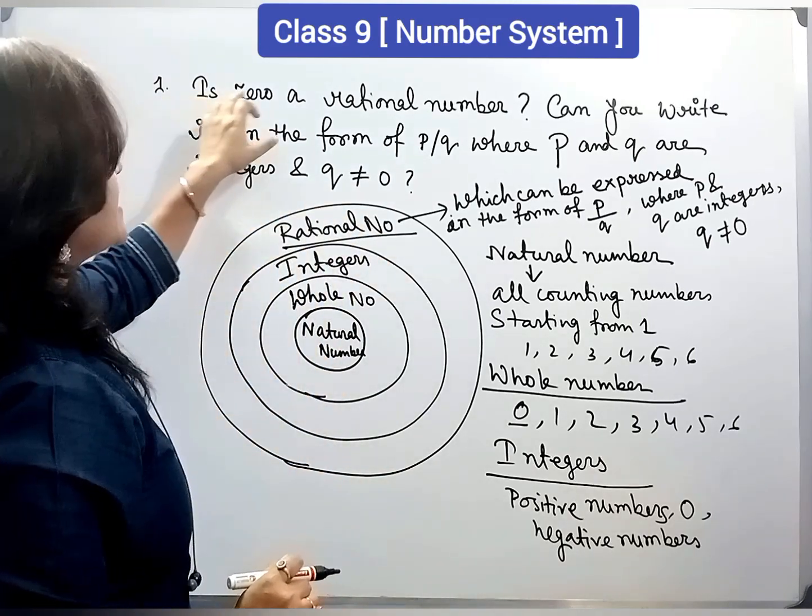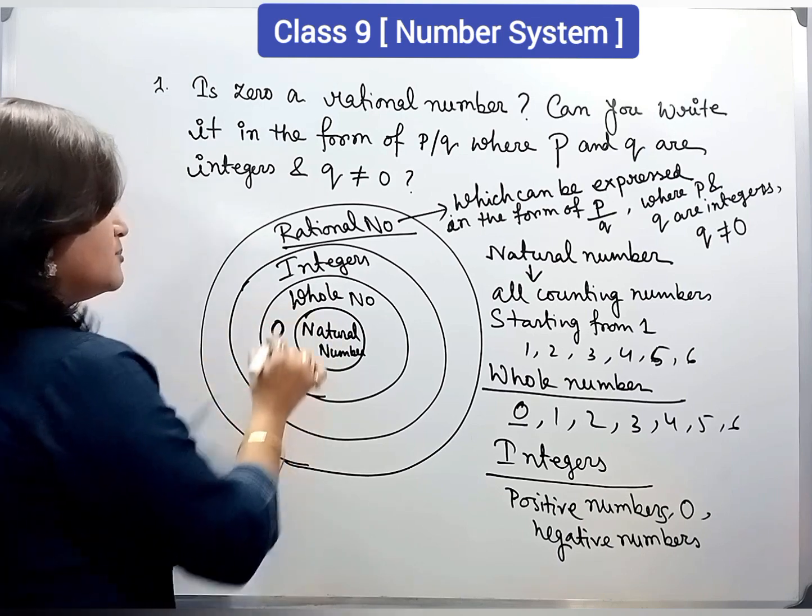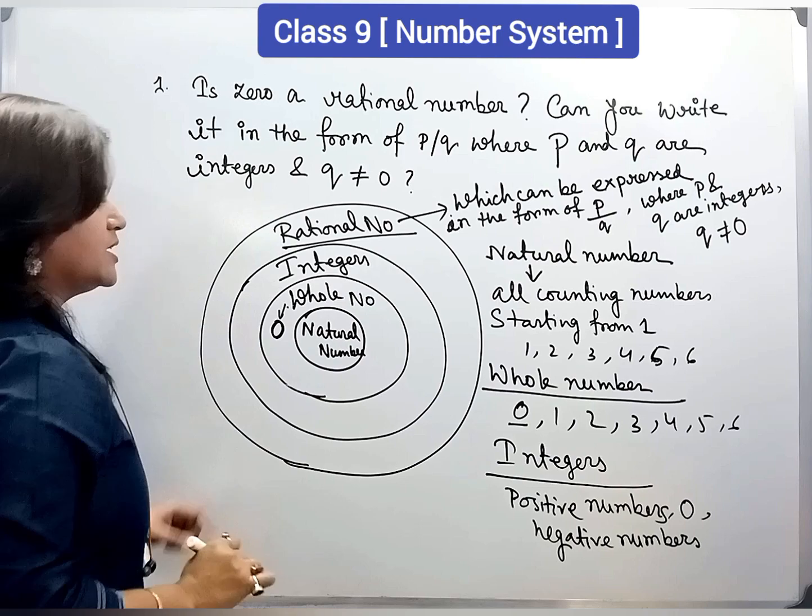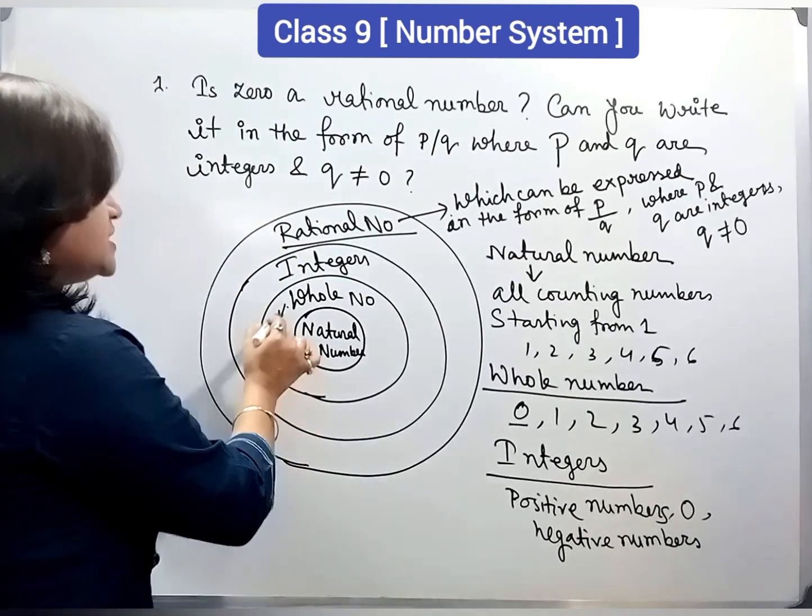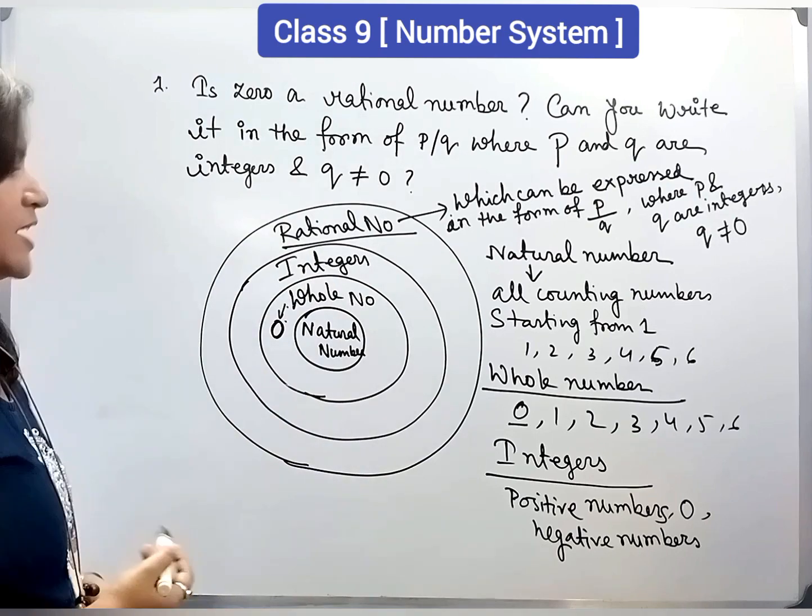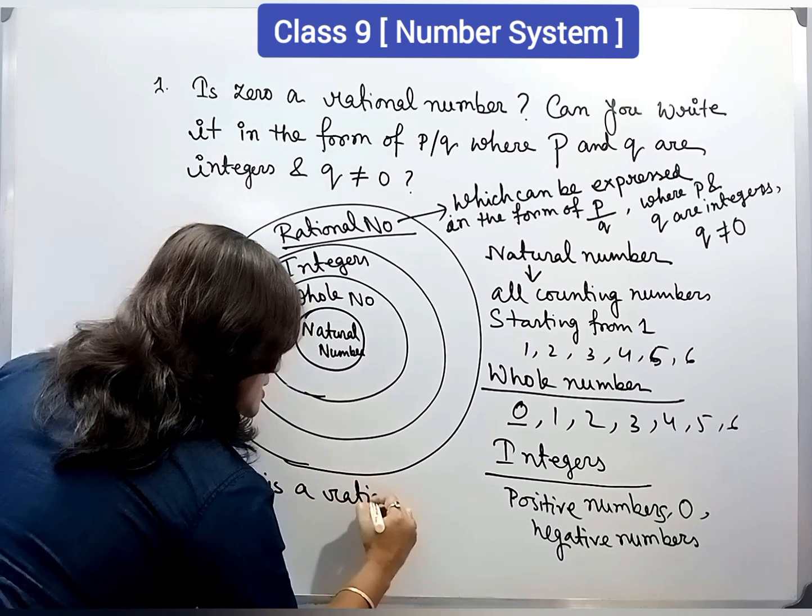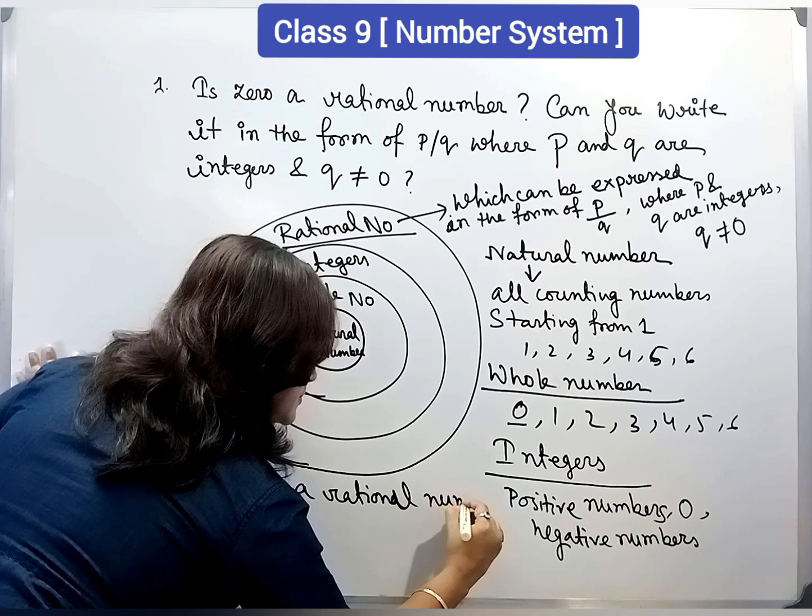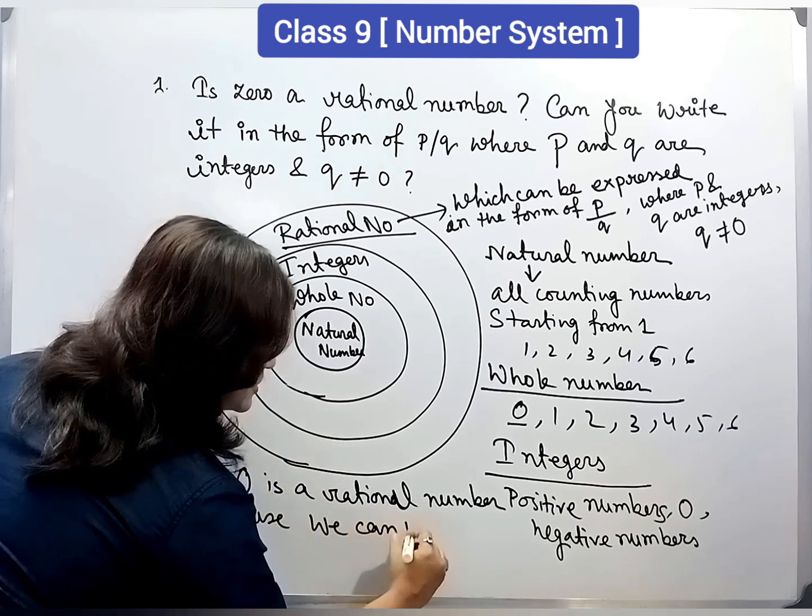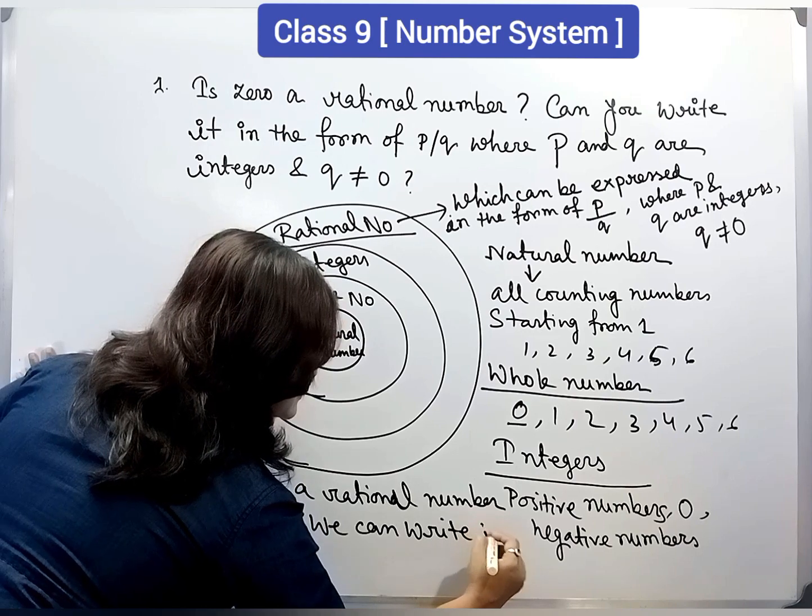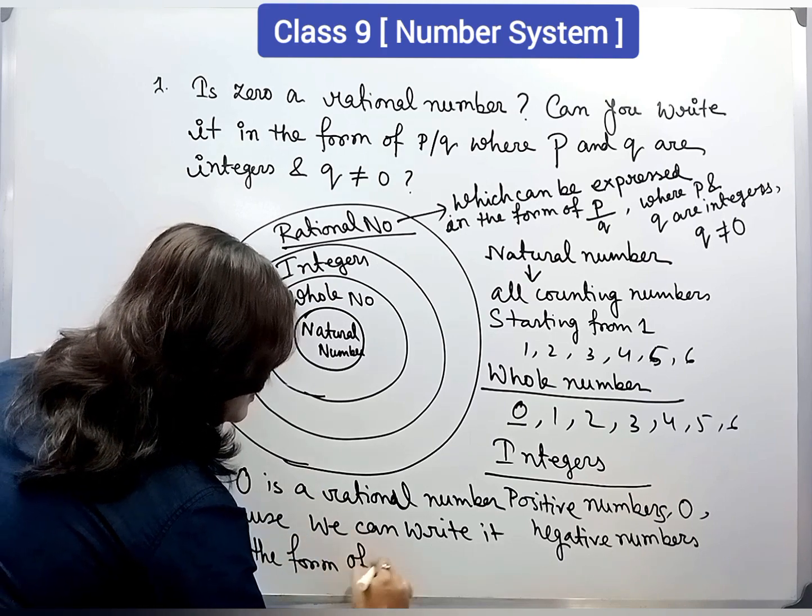Now, our question is that, is 0 a rational number? Yes, 0 is a rational number because 0 is a whole number and whole number is a rational number. All natural numbers, all whole numbers, all integers are rational number. So, 0 is a whole number. That means, 0 is a rational number. In other way, we can say that 0 is a rational number.